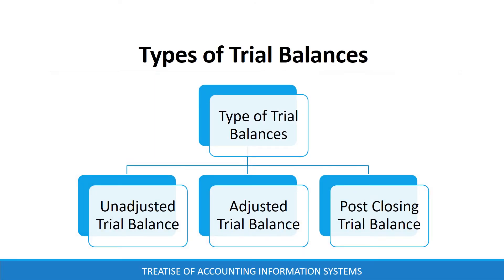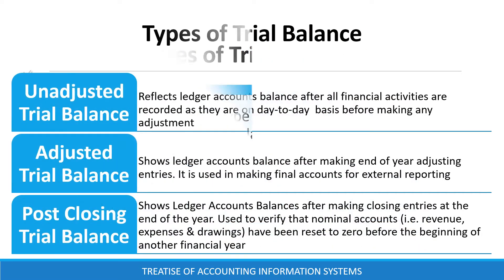There are three types of trial balance: an unadjusted trial balance, an adjusted trial balance, and a post-closing trial balance. An unadjusted trial balance reflects ledger account balances after all financial activities are recorded on a day-to-day basis before making any adjustments.